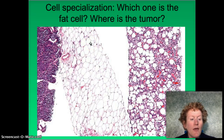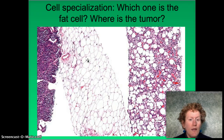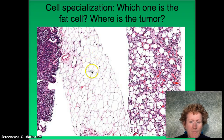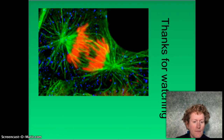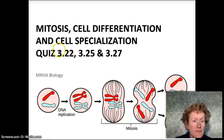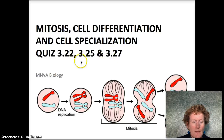Cell specialization results in structures that reflect function. Fat cells, whose job is to store, are so full of fat that the nucleus gets pushed to one side. Thanks for watching — you're now ready to take quiz 3.22 on mitosis, quiz 3.25 on cell specialization, and 3.27 on differentiation. Thanks so much.